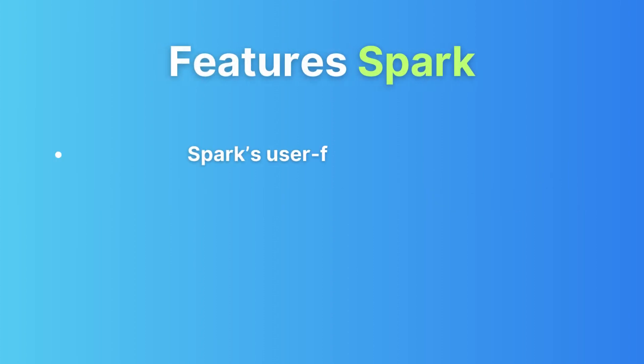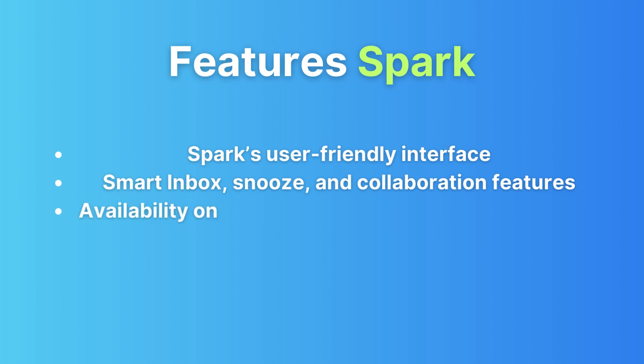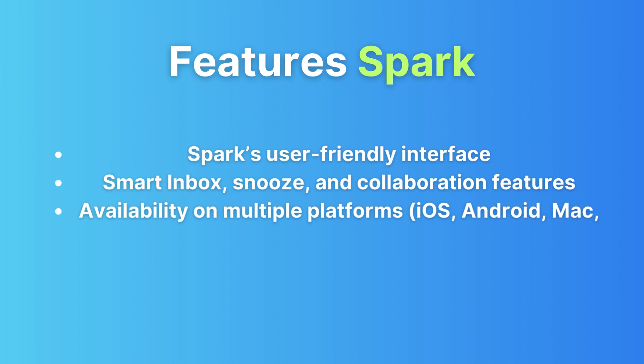Let's begin by talking about the feature sets of Spark and Superhuman, granting us insights into their capabilities and functionalities. First of all, Spark. Spark prides itself on an intuitive and user-friendly interface. It offers a plethora of features aimed at streamlining your email experience. This smart inbox feature automatically categorizes your emails, ensuring that you're always viewing the most important ones first. Additionally, Spark provides a snooze feature, allowing you to temporarily hide emails to clear your inbox and revisit them at a more convenient time.